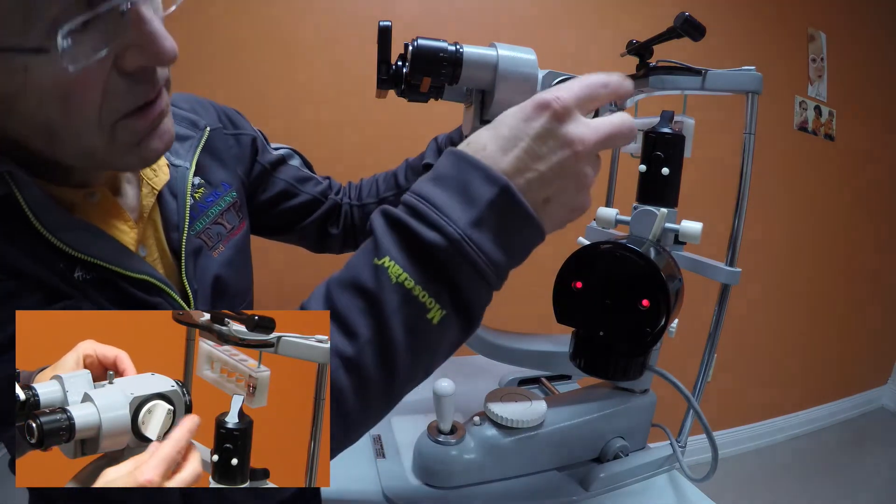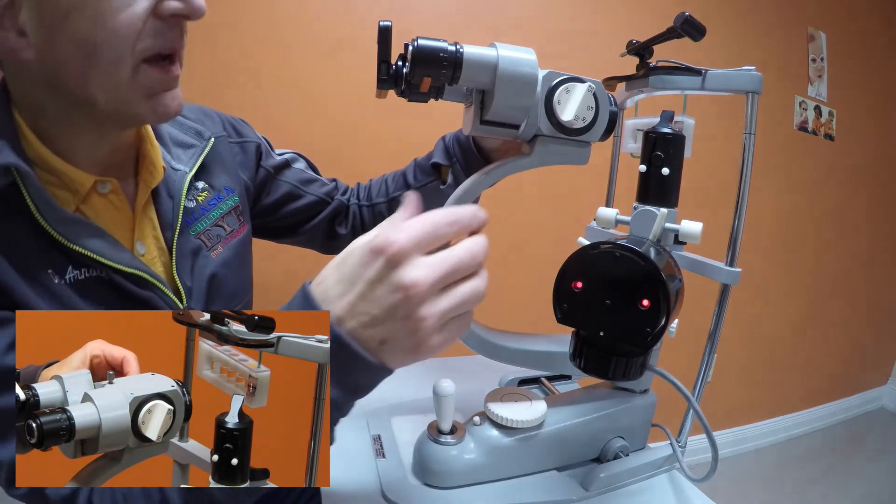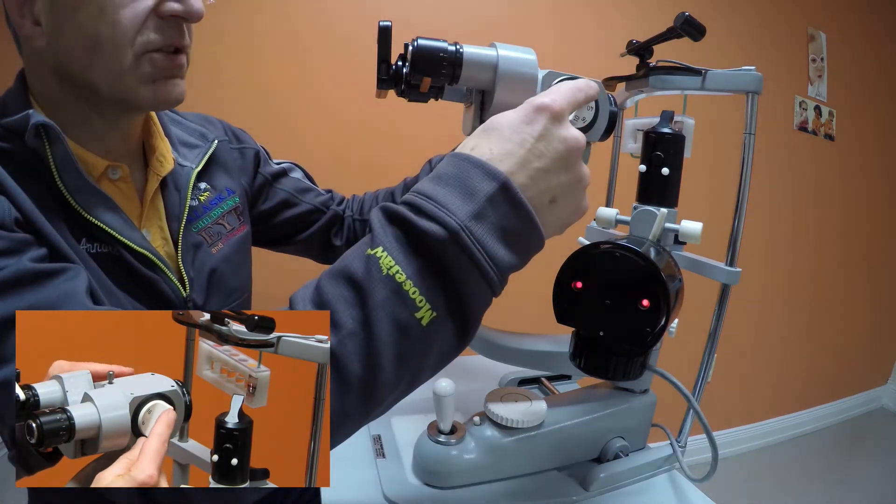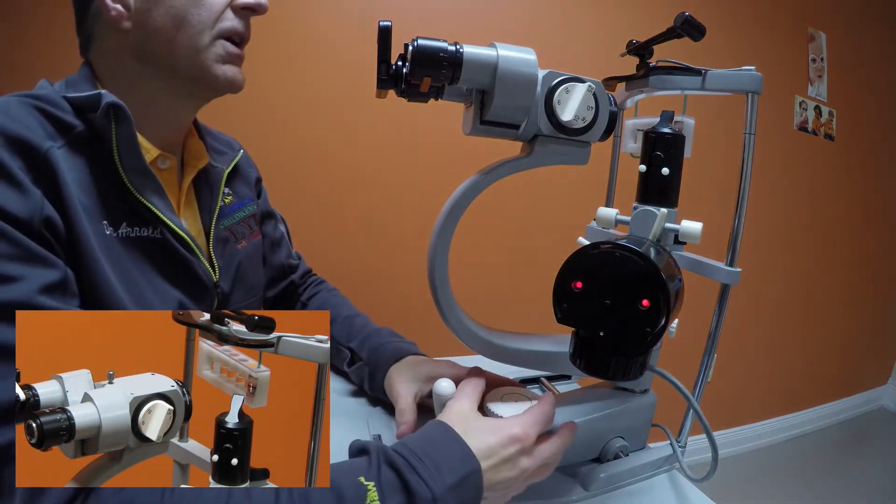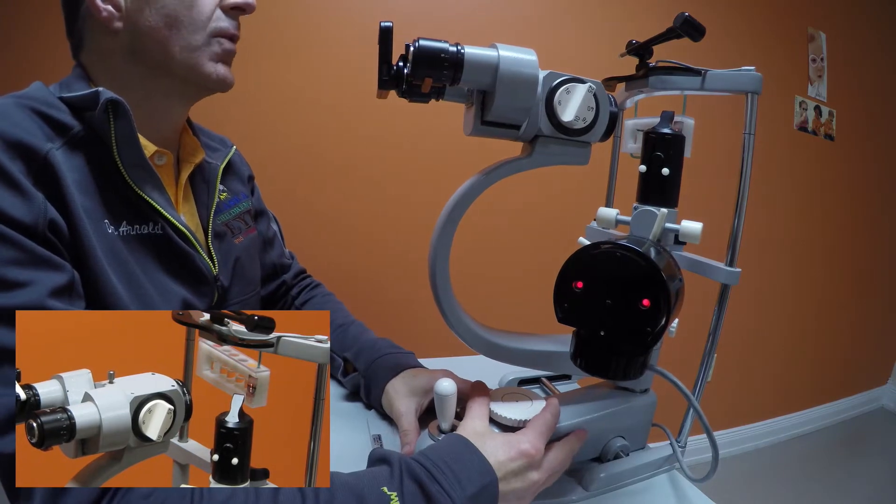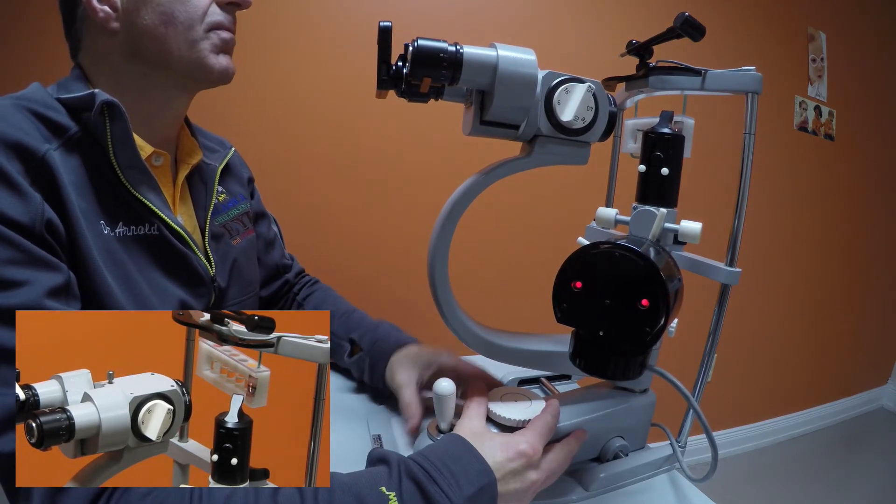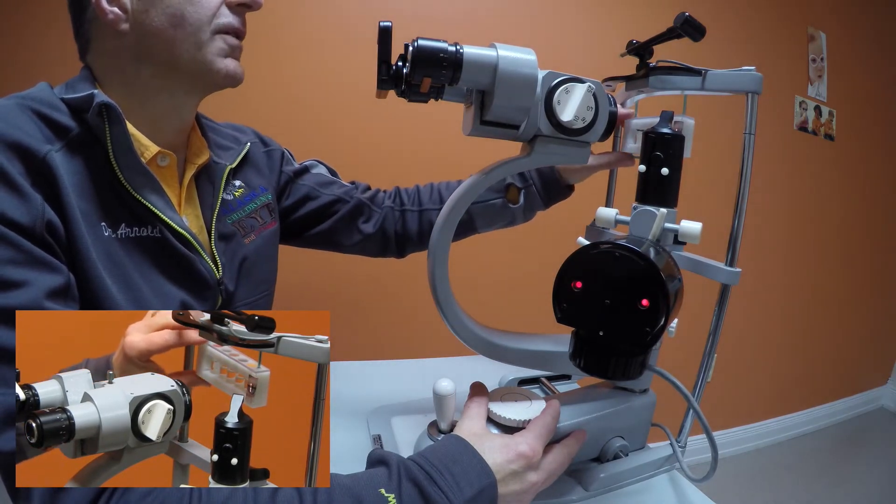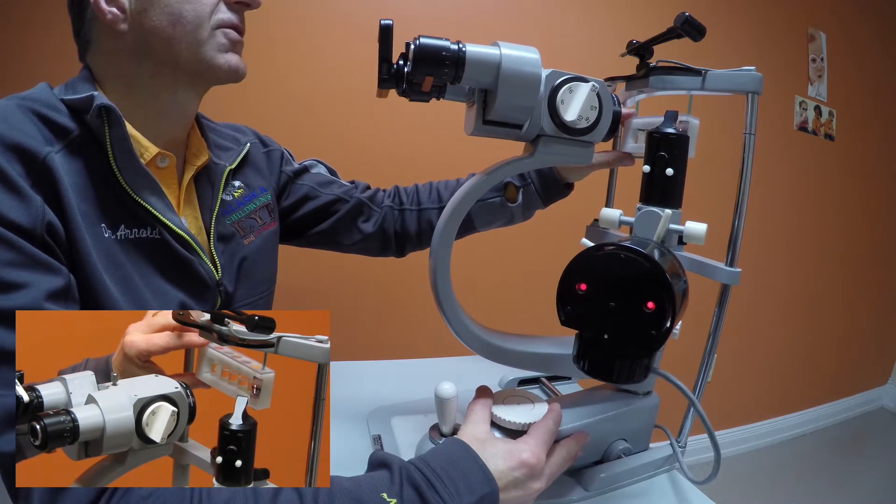The camera, the device on the slit lamp, has magnification on this dial. As you can see, we can see the beam focusing on the image on the iritis test kit.